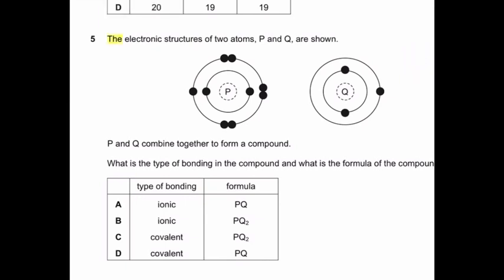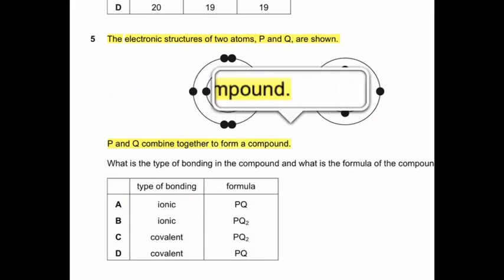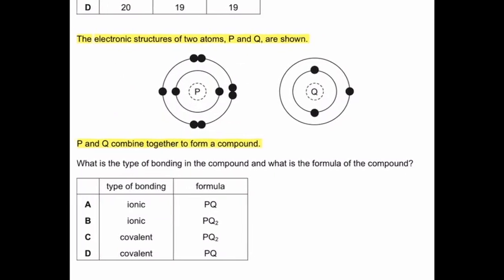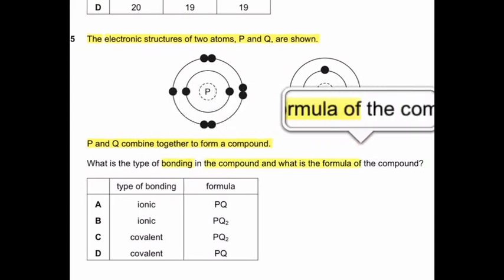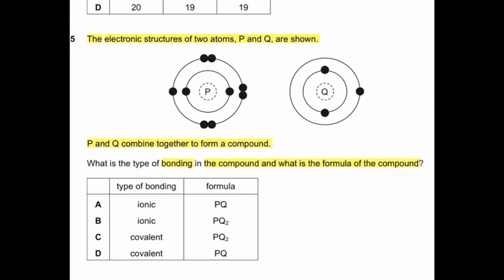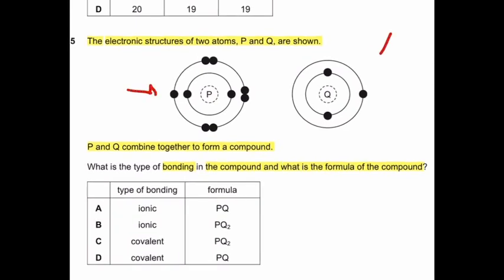Question 5: The electronic structures of two atoms P and Q are shown. P and Q combine together to form a compound. What is the type of bonding in the compound and what is the formula of the compound? Here we see the electronic structure of P and Q. P has 2 electrons in the first shell and 7 electrons in the second shell. And Q has electronic configuration like 2,1. It shows that P belongs to group 7 and valency of P is minus 1. Q belongs to group 1.